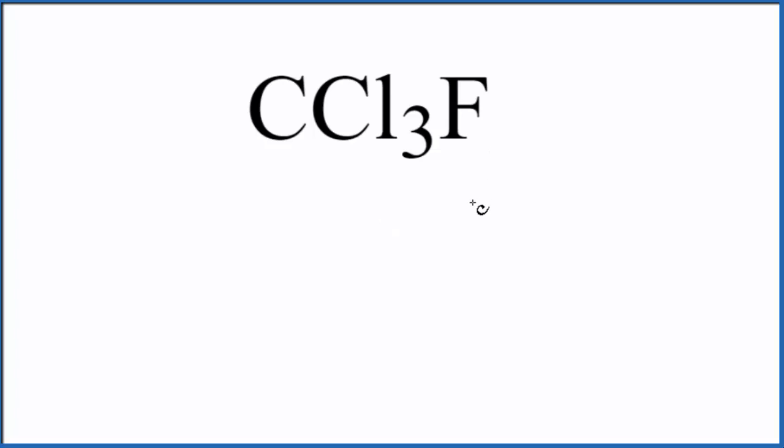So for Lewis structures, we need to first count up the valence electrons. Carbon's in group 14, sometimes called 4A, that has 4. Chlorine group 17, that has 7. We have three chlorines.